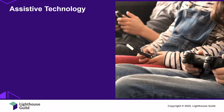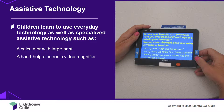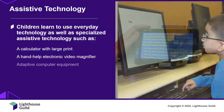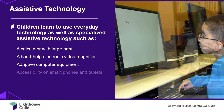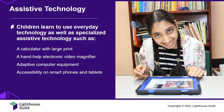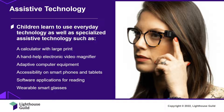Technology is all around us and impacts almost every aspect of our lives. Children with visual impairment may learn to use everyday technology, such as a smartphone, as well as more specialized assistive technology. Technology commonly used by school-age children includes a calculator with large print or voice output for working on math problems, a handheld electronic video magnifier to read short pieces of text, adaptive computer equipment and software with magnification, screen reading or voice input for reading and writing, accessibility options on tablets and smartphones, a growing selection of software applications for reading, accessing electronic information, identifying objects, navigation and more, and for older children, more advanced assistive technology such as wearable smart glasses for reading.